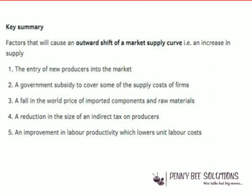Another factor is the introduction of technology. If a new technology becomes available, many businesses will start to use it in their production processes. New technology is usually more efficient than older technology and helps lower the cost of production, increase productivity, and increase supply. For example, an old machine may produce 1,000 units per hour while a new one produces 1,500 units per hour. The old machine might need five operators while the new one needs only two — cutting costs and gaining more productivity, so supply definitely increases.